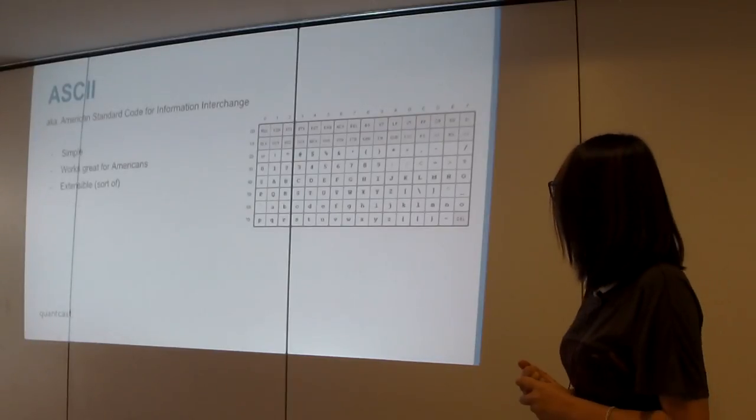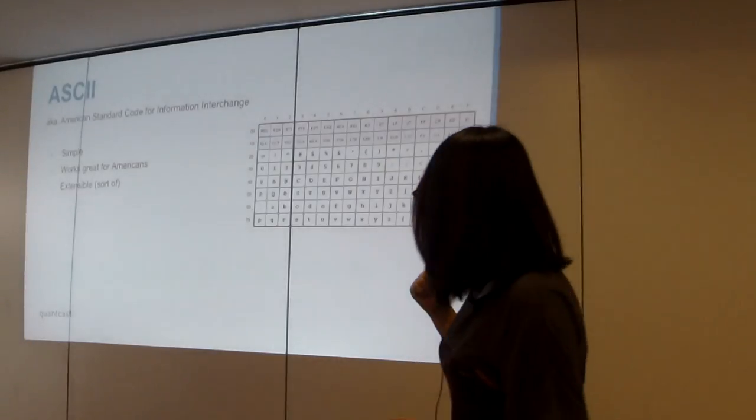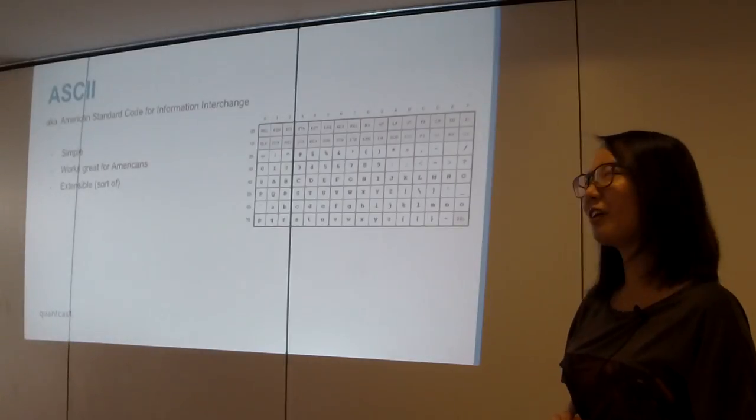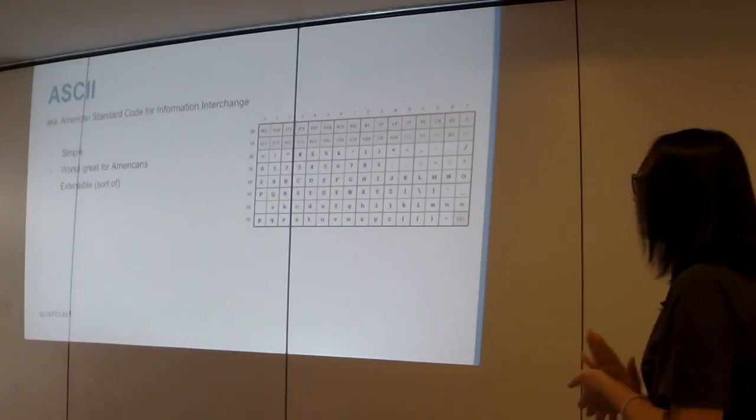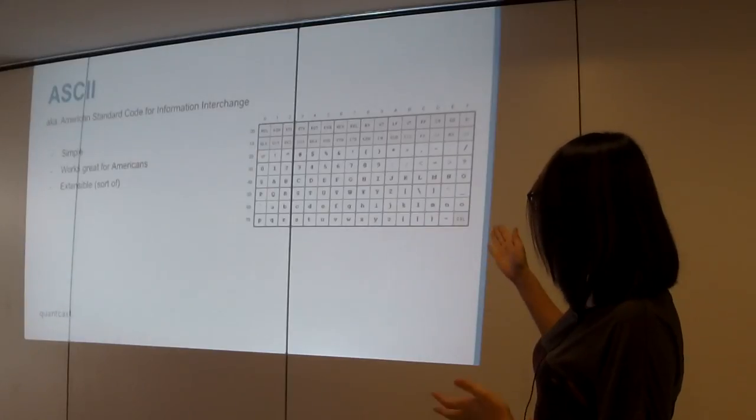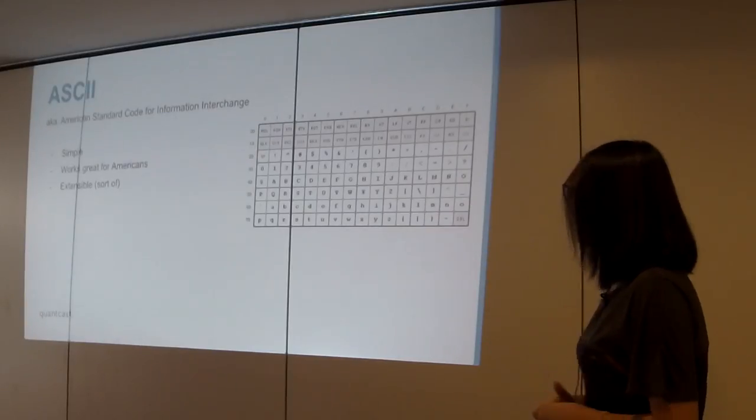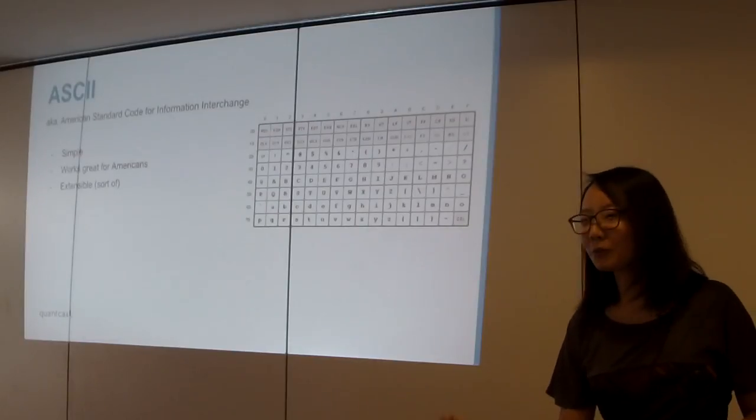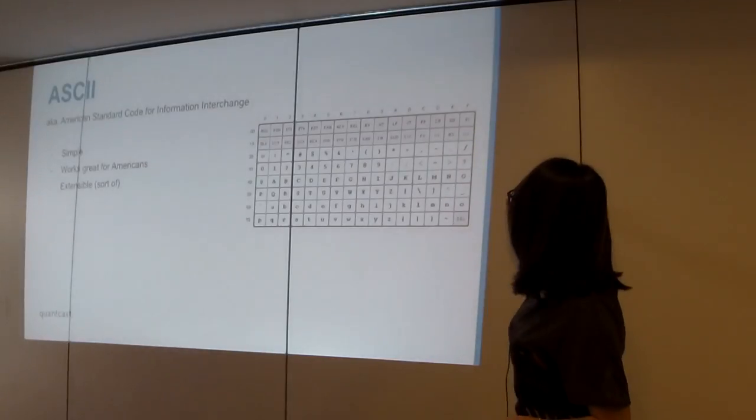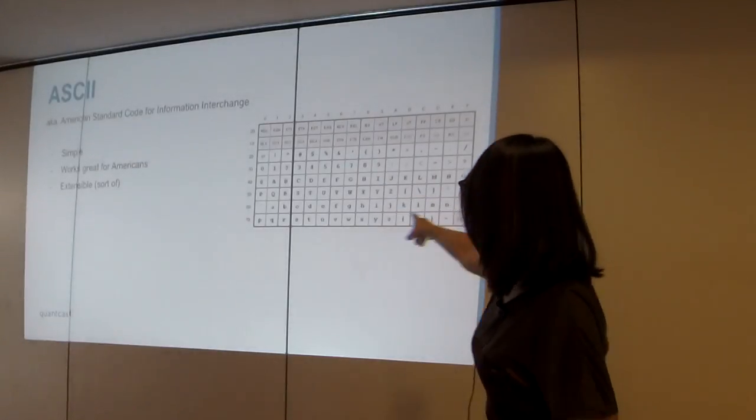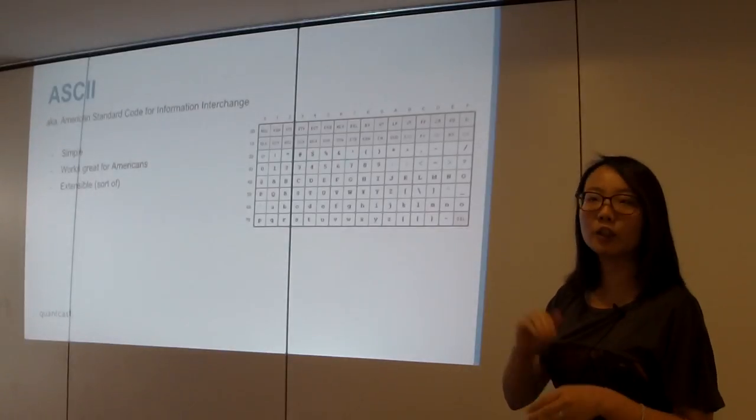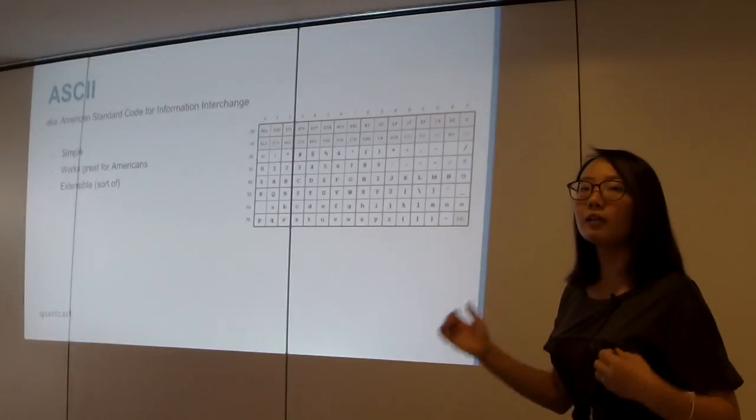So yeah, let's talk about ASCII. ASCII stands for American Standard Code for Information Exchange. This is one of the earlier attempts to making this translation work. And then it has the upside of working and simple, and it works great for Americans, extensible to the rest of the world, sort of, not really, but we'll see why. So it's simple because it's effectively this table where you have characters, alphanumeric characters mapped to a number. And then if we can map a character into a number, that number can be represented in binary form, then computers can understand.